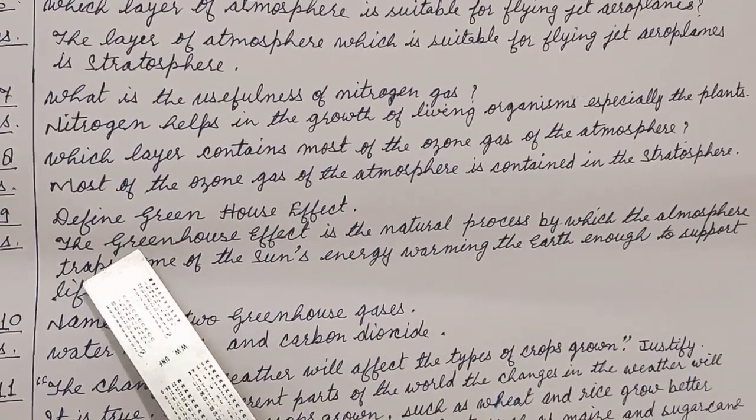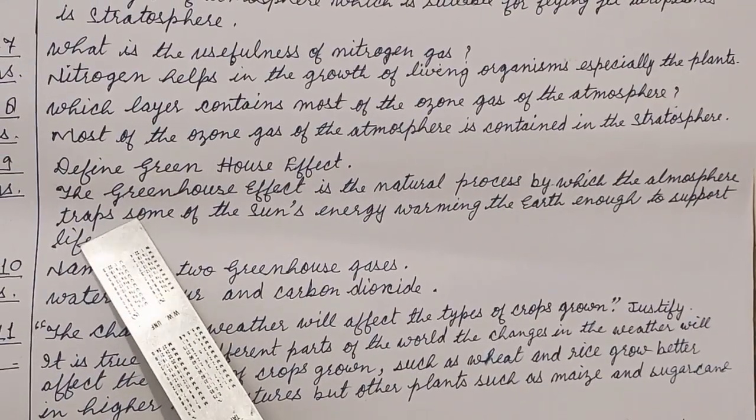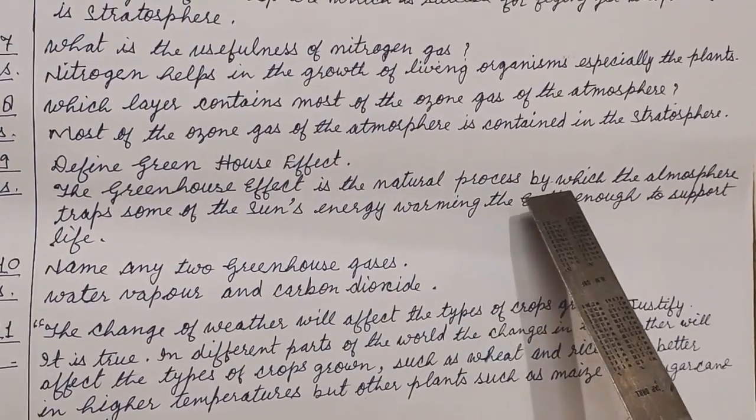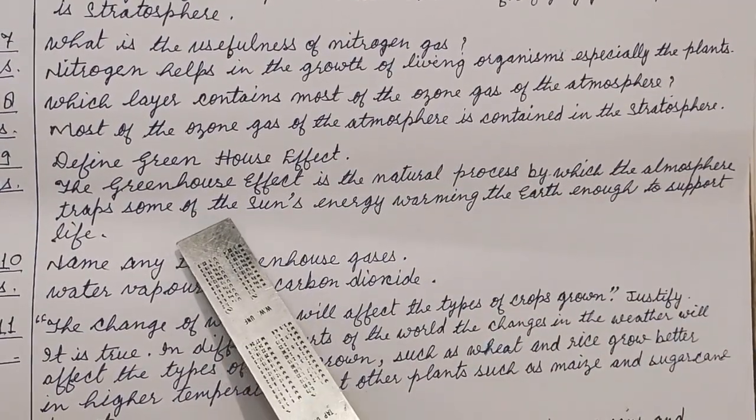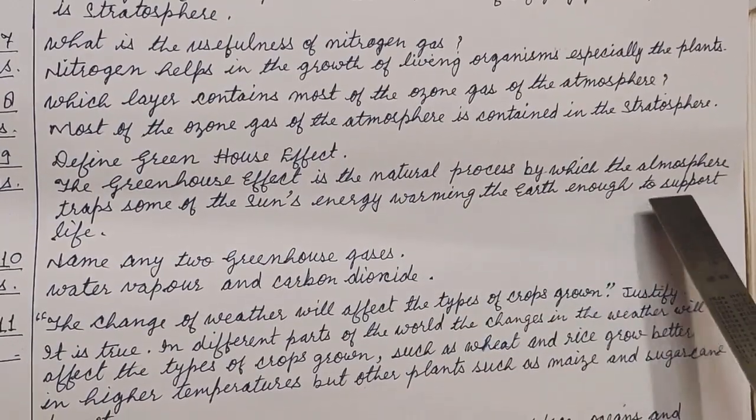Question number 9. Define greenhouse effect. Answer. The greenhouse effect is the natural process by which the atmosphere traps some of the sun's energy, warming the earth enough to support life.